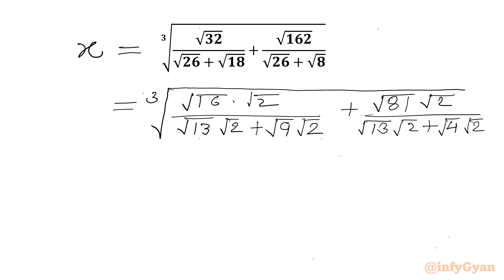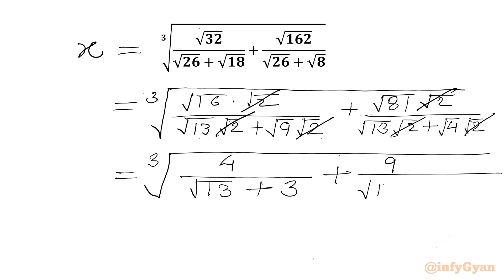Now root 2 is common from the denominator. So we will take common and we can cancel from the numerator's root 2. It will be equal to cube root of root 16 is 4 over root 13 plus root 9 is 3 plus root 81 is 9 over root 13 plus root 4 is 2.